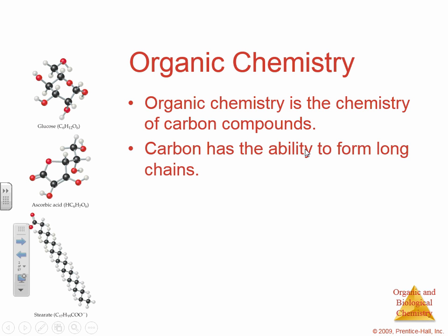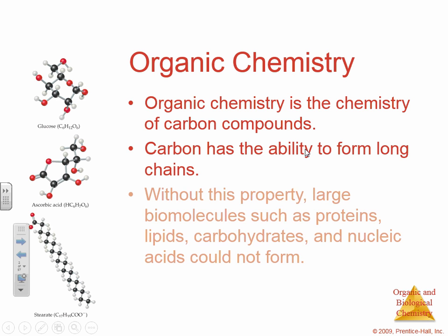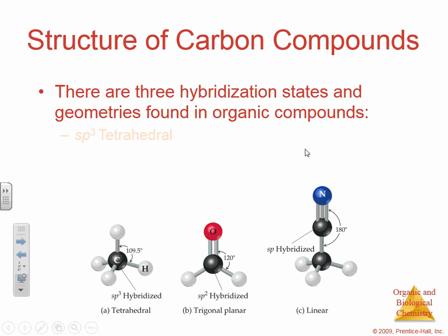If we were to make the periodic table of organic chemistry, it would essentially consist of three elements: carbon, hydrogen, and oxygen. Because carbon has four free electrons, it has the ability to form really long chains. And without this property, molecules which your entire body depends on — such as proteins, lipids (which are fats), carbohydrates, and nucleic acids — can form.